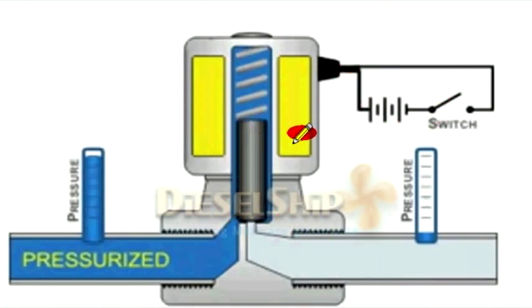This is the circuit for the solenoid coil. As this is energized, the electromagnetic coils energize and then pull the coil up, allowing the flow of fluid from the upstream to flow through the downstream. Let's see how it works.